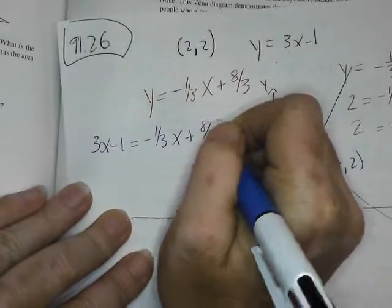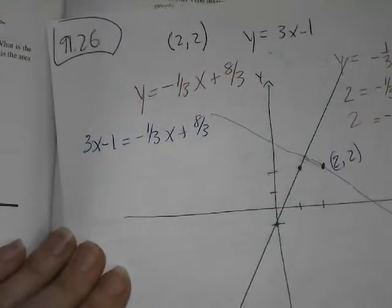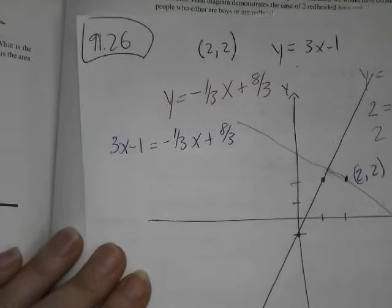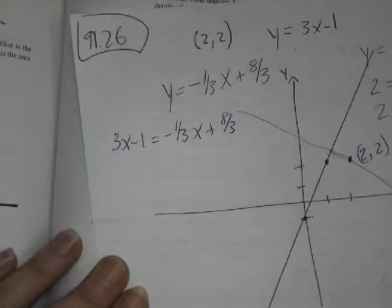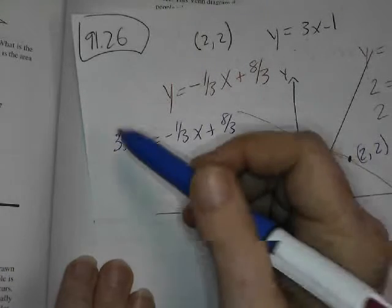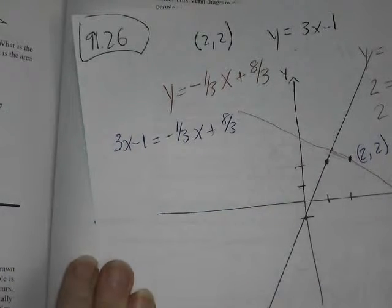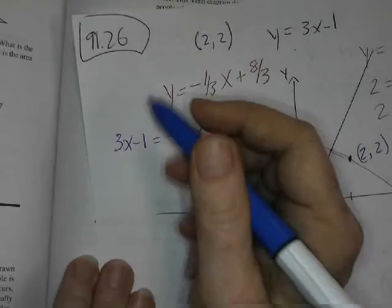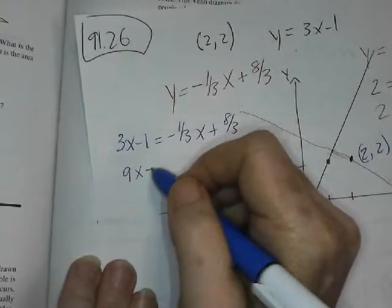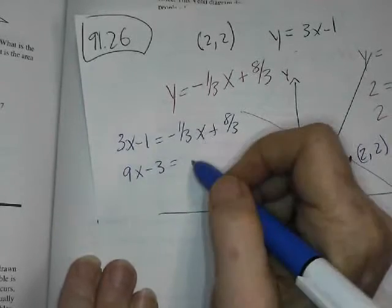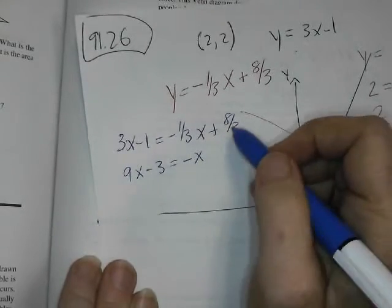I think I'm going to actually get rid of those fractions because it would be fast and I don't really want to deal with the fractions. So I'm going to multiply every single thing by 3 to get rid of the fractions before I finish this. So 3 times 3, that's 9. 3 times negative 1, negative 3. 3 times that gives me negative x. 3 times that gives me 8.